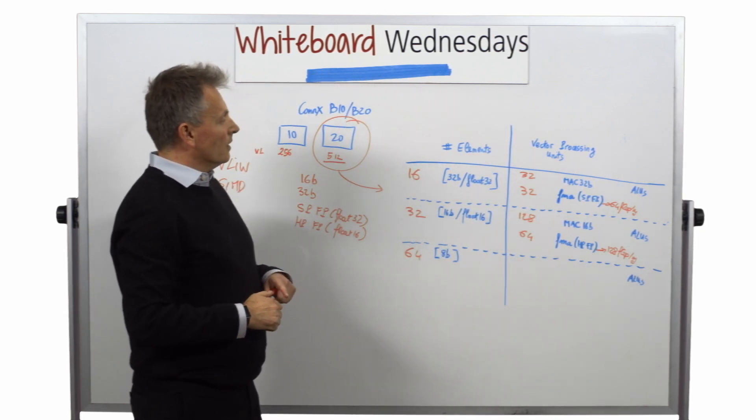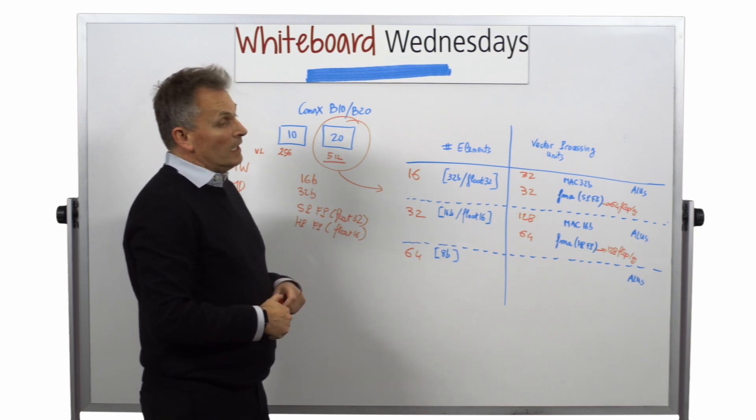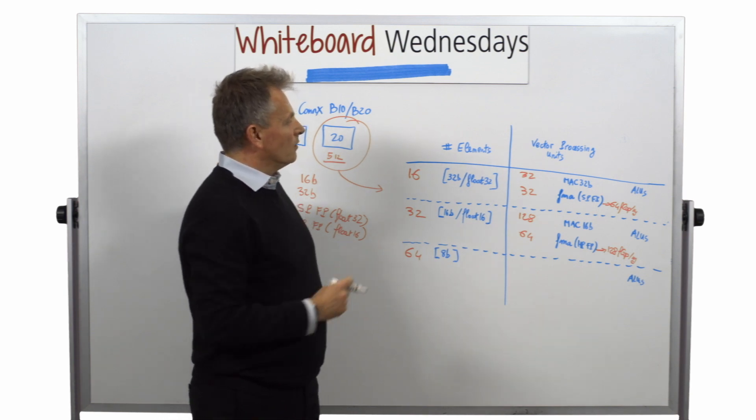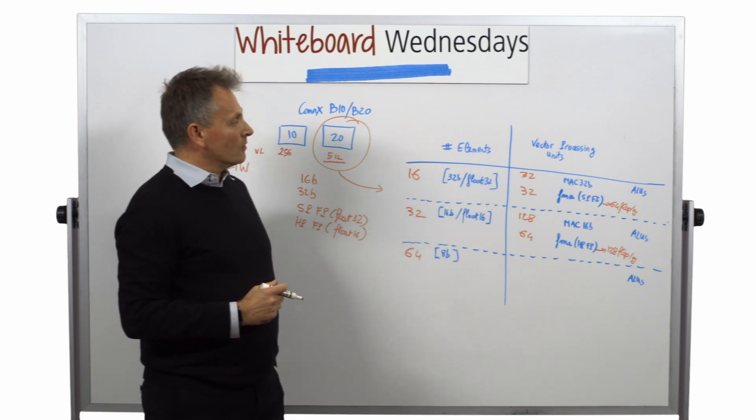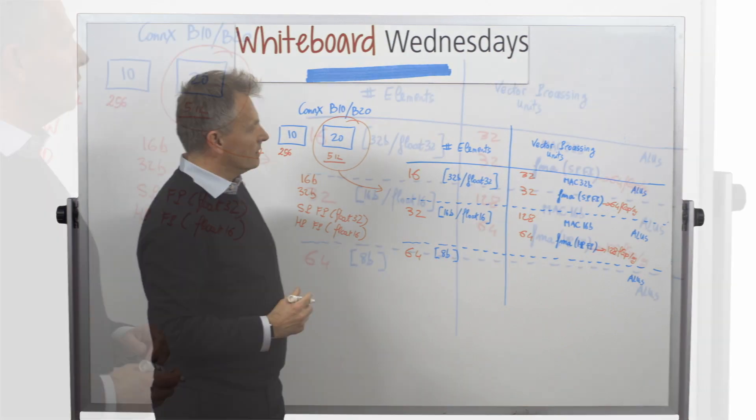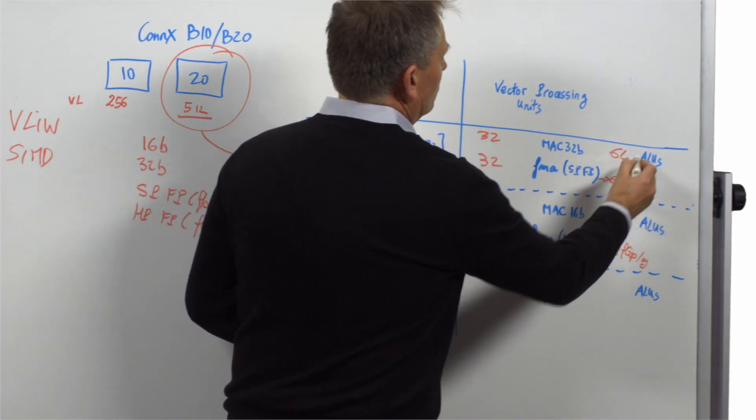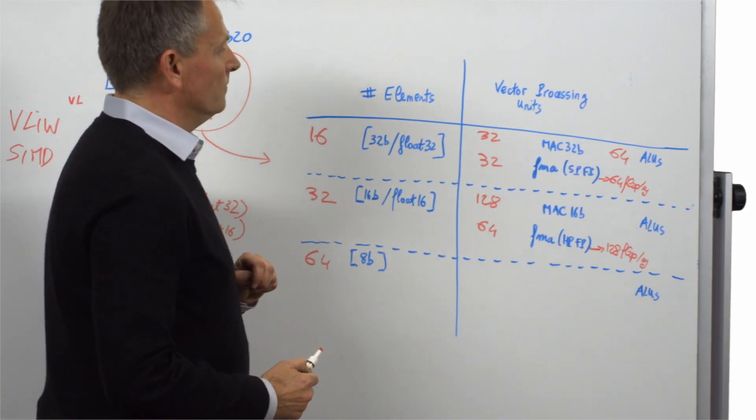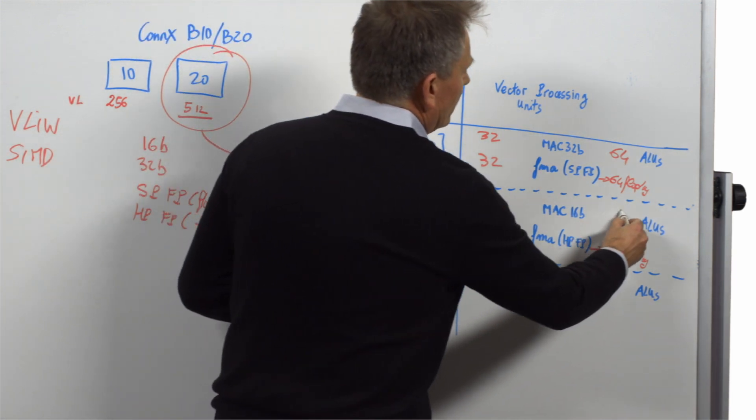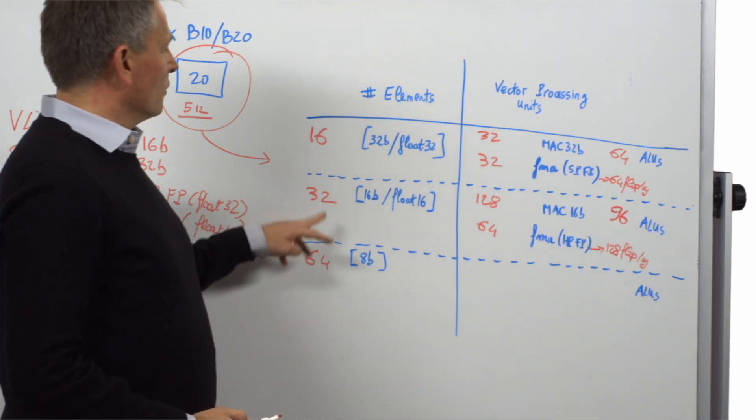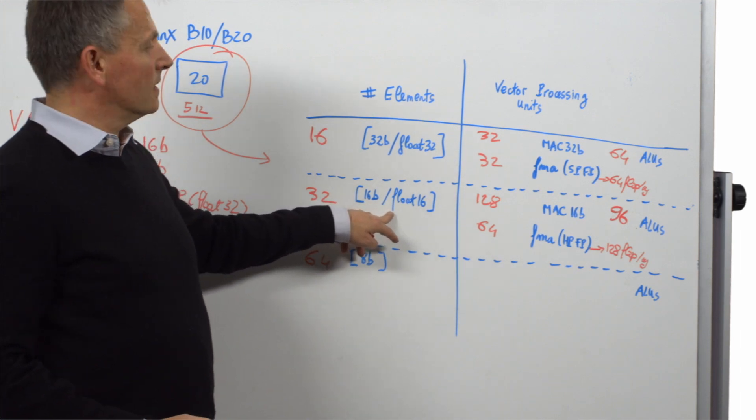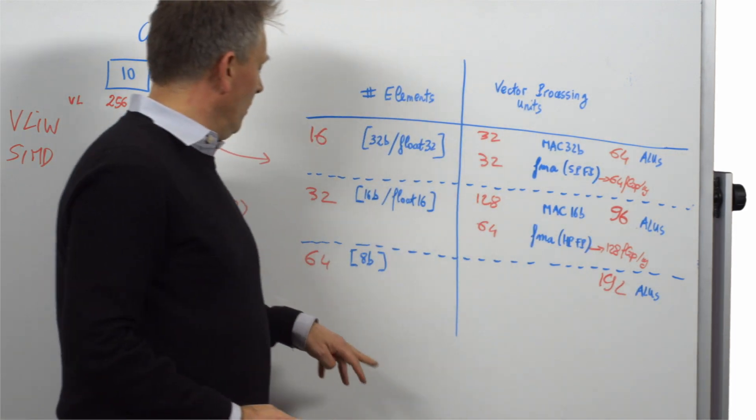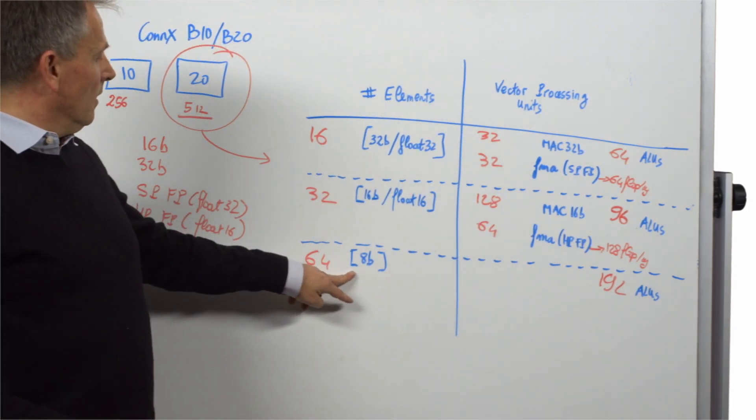We also have some ILU capabilities, and we also have other vector units. But in particular here, I will point out some of the ILU capabilities. We have 64 ILU to process 32-bit data types, or float32. We have 96 ILUs in order to process the 16-bit fixed point, or float16. And we have 192 ILUs for the 8-bit data types.